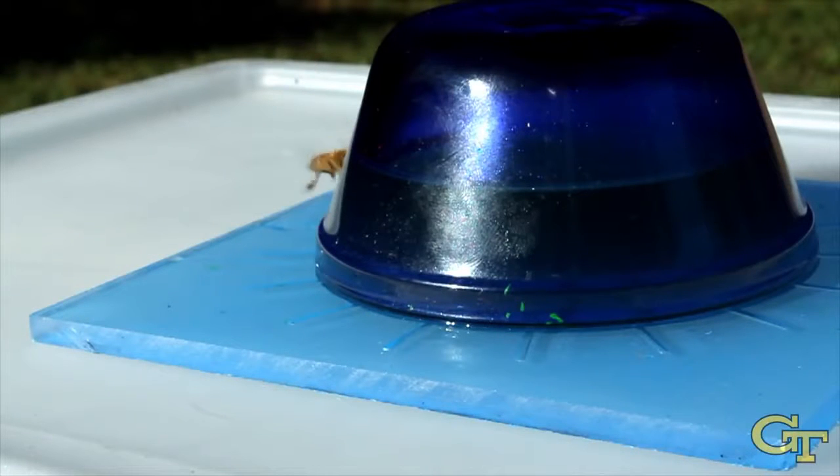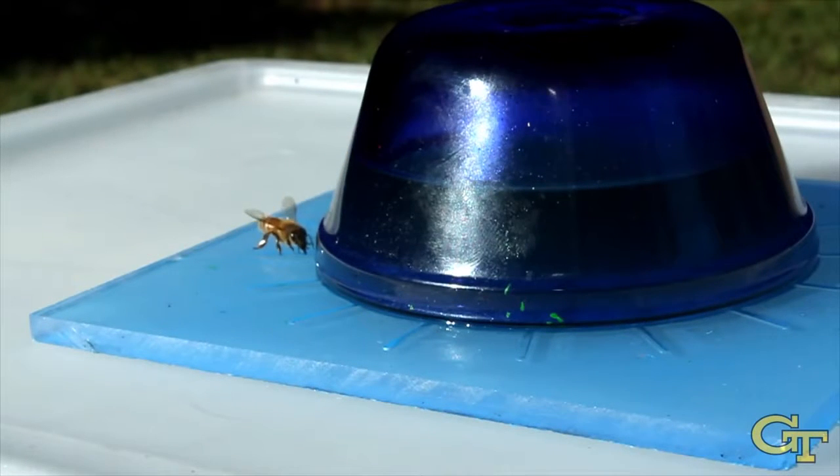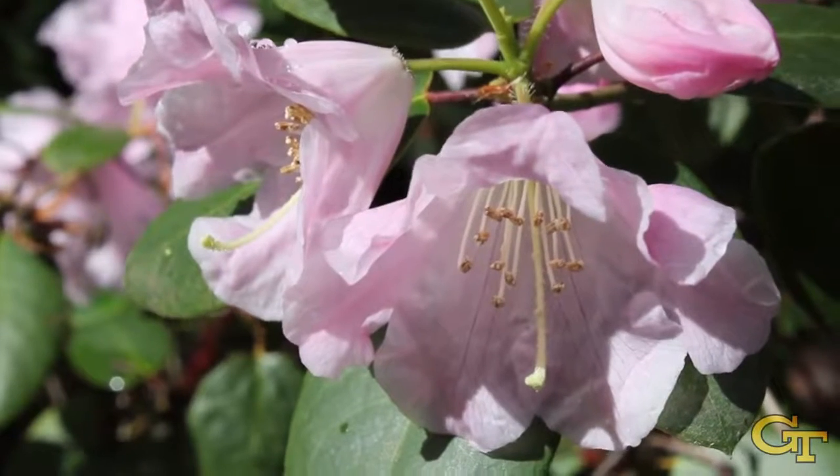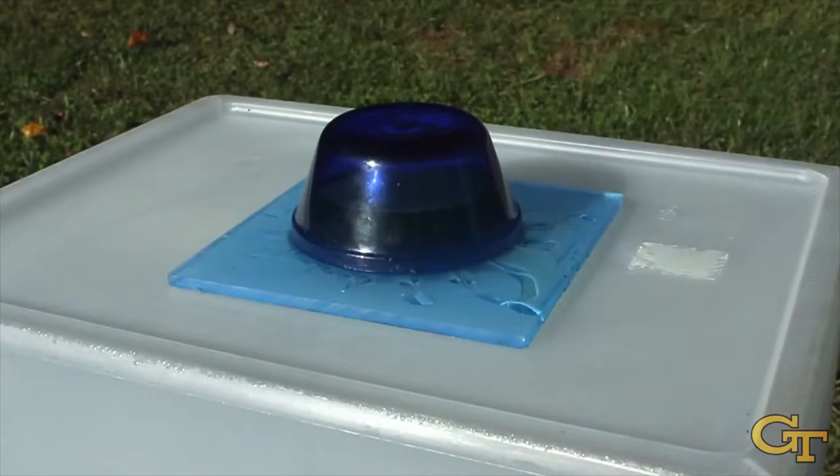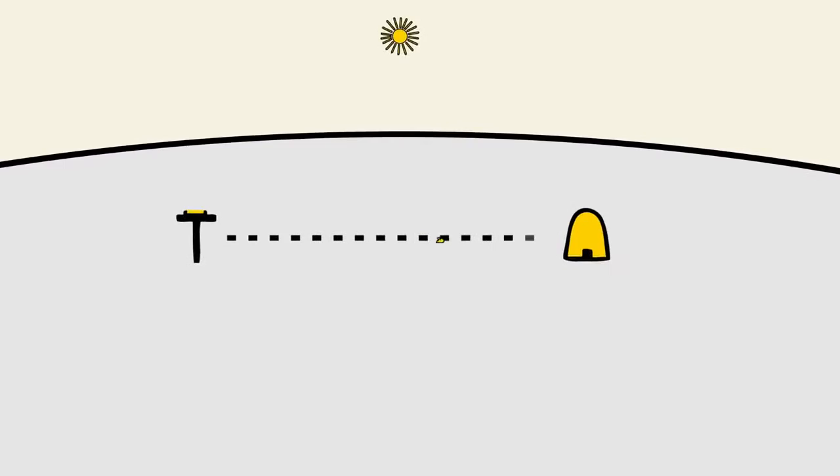A foraging honeybee will eventually discover a new food source, such as a freshly blooming flower or artificial feeder placed by a scientist. After this visit, an interesting thing happens.